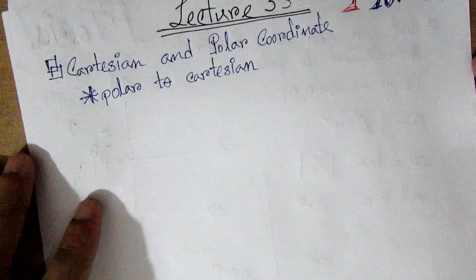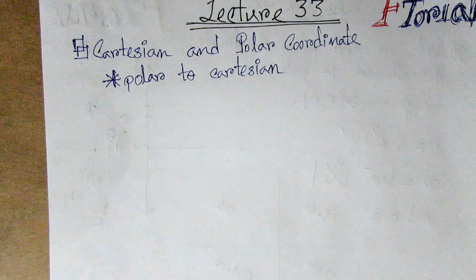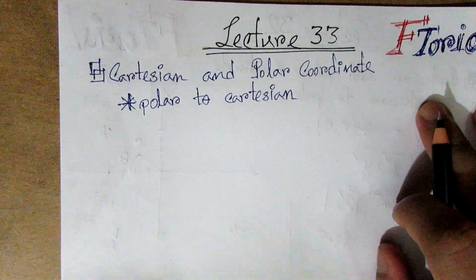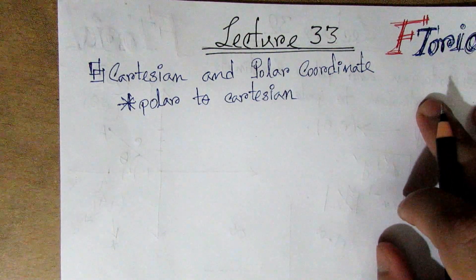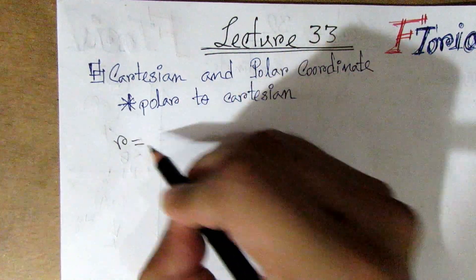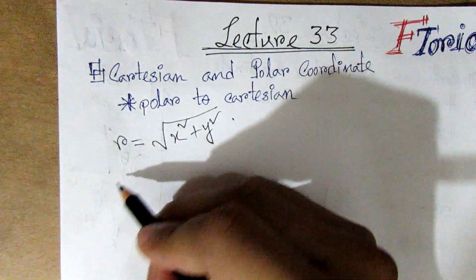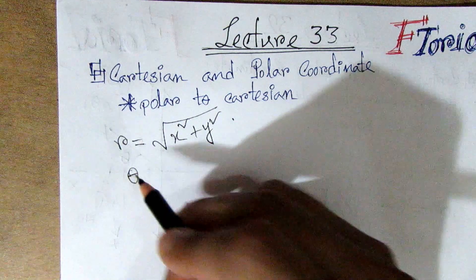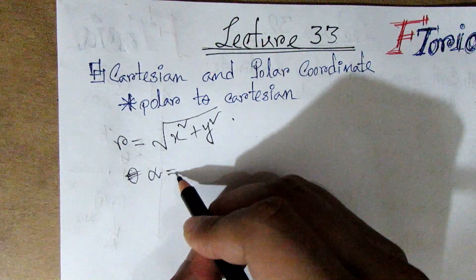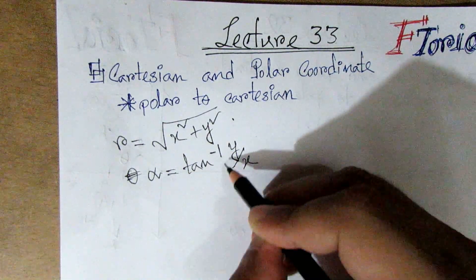Here we have Cartesian to Polar Conversion. We have to find out: r is equal to root over x squared plus y squared, and alpha is equal to tan inverse y by x.